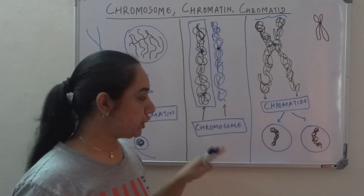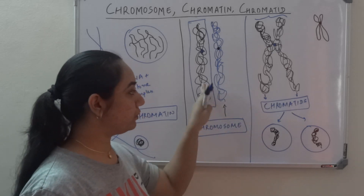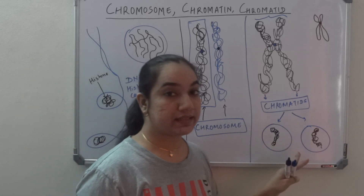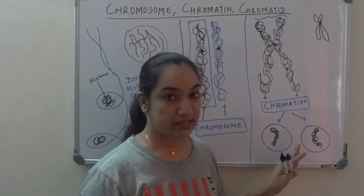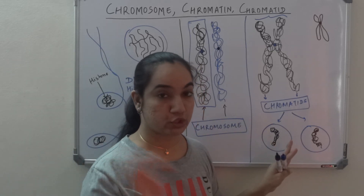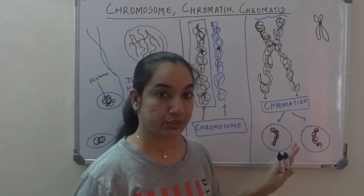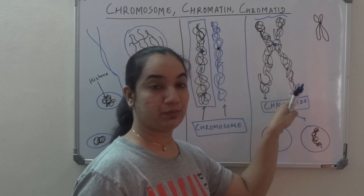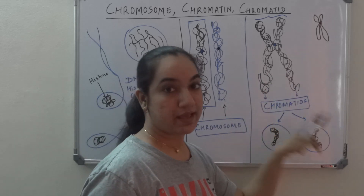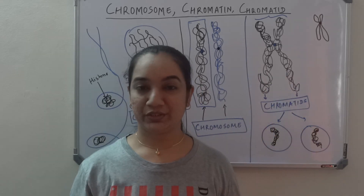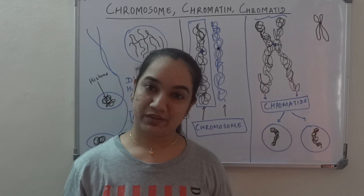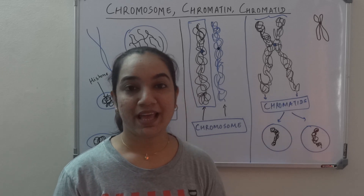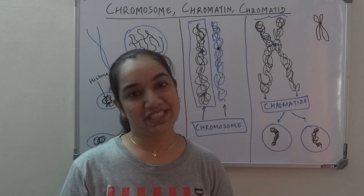When this DNA gets condensed at the time of cell division it forms a chromosome, and it has to duplicate itself because the cell is dividing and each copy should go to the new cell. Each copy in this chromosome is called a chromatid. I hope you understood the difference — do subscribe to the channel for a new video every Friday.